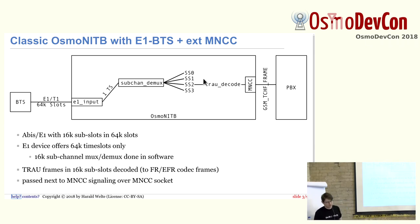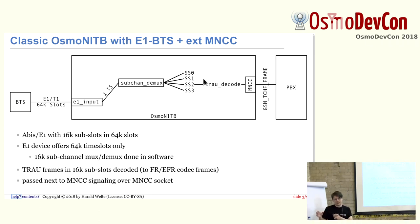We do not have AMR support for E1 BTSs in OsmoNITB. That's because the BTSs we were using when we did this development — for example the BS11 — do not do AMR; it's too old. But with modern Ericsson BTSs, for example, we could also add AMR support. It's basically parsing the trow frames for AMR and converting them to the AMR payload format we have in RTP and vice versa — some bit shifting and interleaving — and then we have that too.